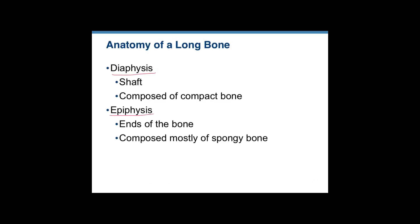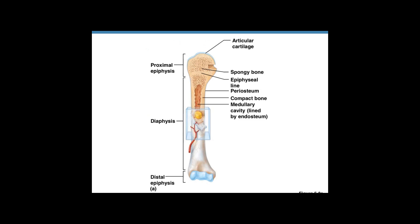Each long bone has a shaft portion and then the ends of it. Since all long bones are going to have two ends, you can have what's typically referred to as a proximal epiphysis and a distal epiphysis. And together, if you're referring to them as plural, it's epiphyses. Here we are with a typical long bone — the same drawing that you're going to find in your book — showing the proximal and distal epiphysis, as well as the diaphysis.